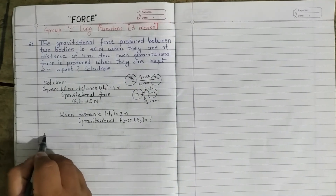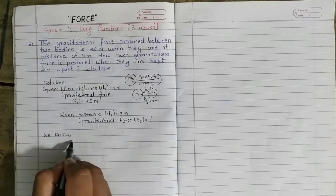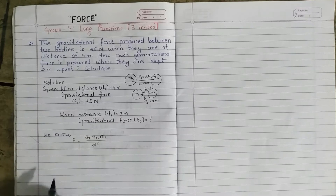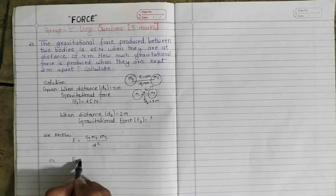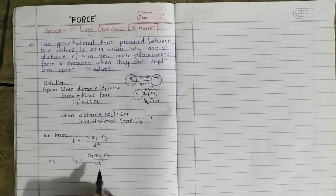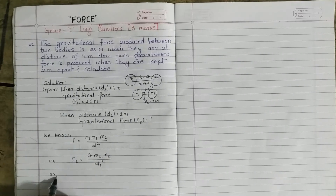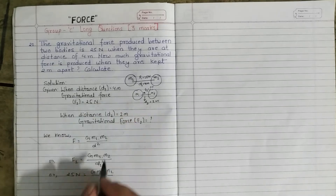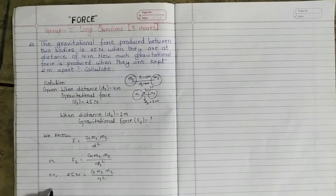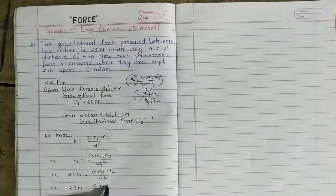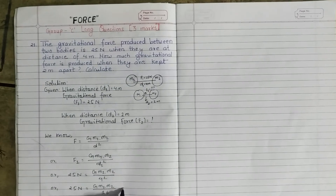By Newton's universal law of gravitation, gravitational force F equals G·M1·M2 divided by d squared. So we can write F1 equals G·M1·M2 divided by d1 squared. Inserting the values: 25 Newton equals G·M1·M2 divided by 4 squared, or 25 Newton equals G·M1·M2 divided by 16. Let this be equation 1.